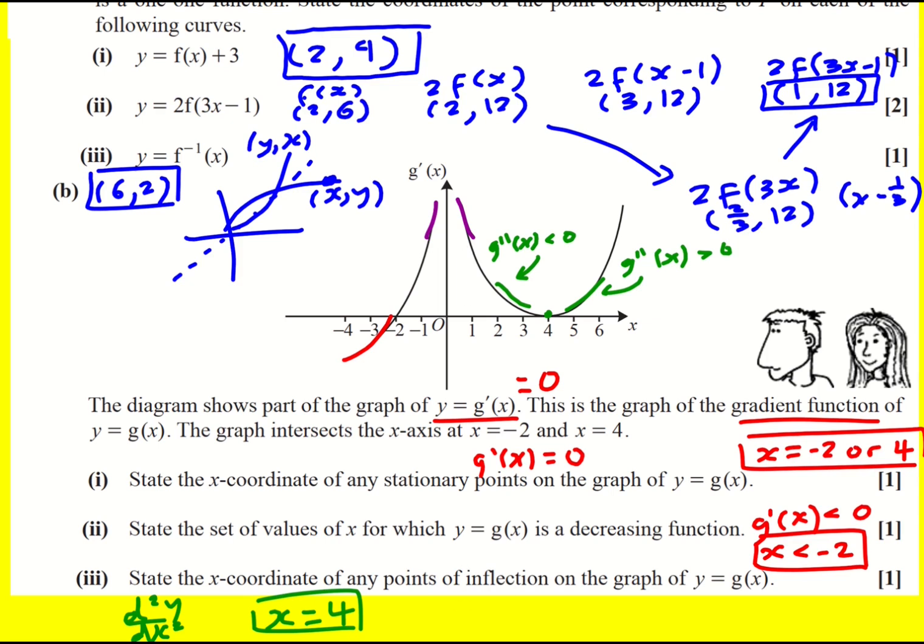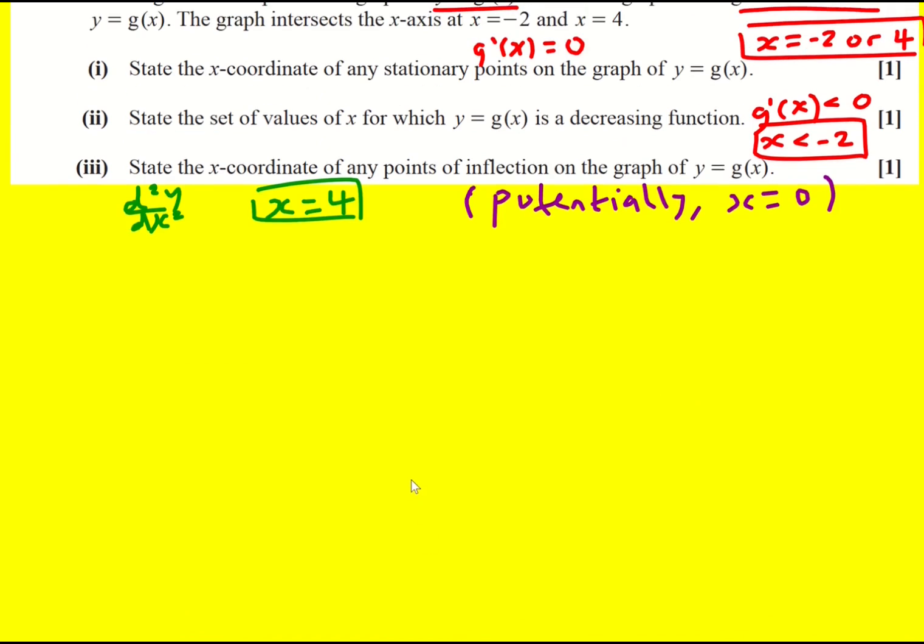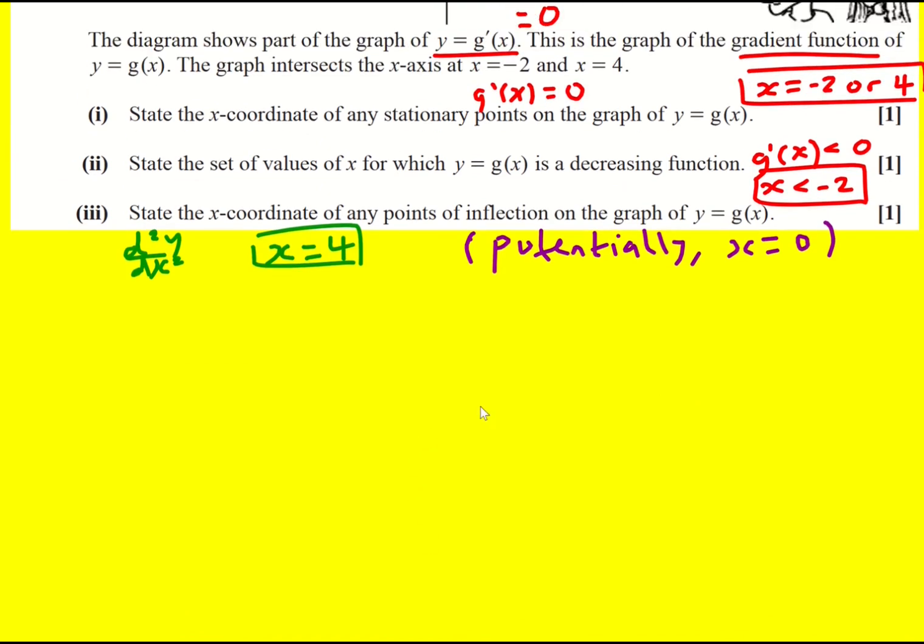Now the bit that tripped me up is that there is another location where the second derivative is changing sign. So g dash of x is positive here and then negative here. The only difference now is that it is not defined at x equals zero. So I put x equals zero as a solution. Now I understand why it might not be a point of inflection, because we do not know if the function is defined at x equals zero. But we also do not know if it's not defined at x equals zero. We just don't have enough information.